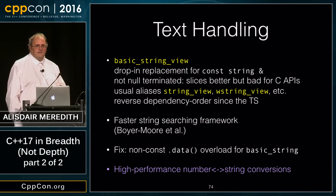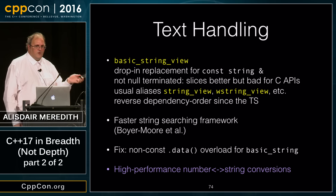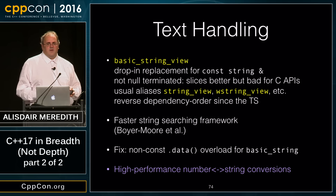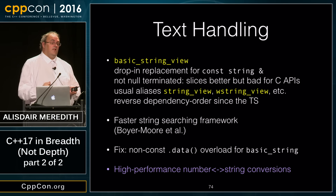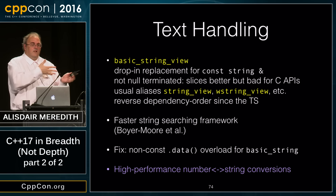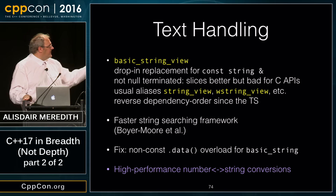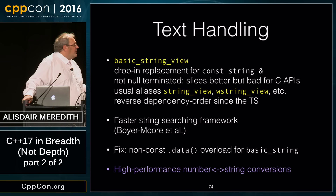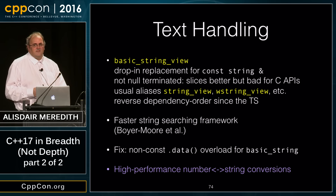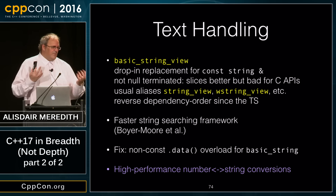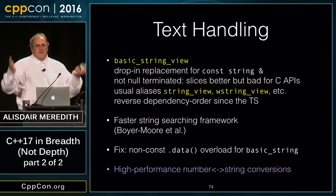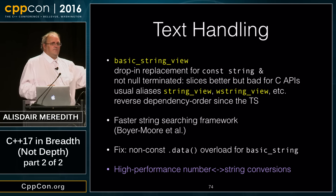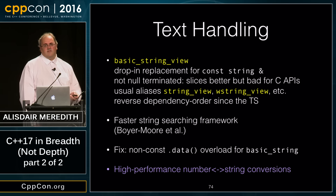A minor fix for basic_string: the data() member function only had a const overload, so we now allow a non-const overload so you can pass string contents to an underlying C API — with the understanding you won't change the length and won't overwrite the terminating null. Also, a high-performance number-to-string and string-to-number parsing library is coming in; it's marked as pending because minor interface issues prevented a clean merge, but it's expected to be part of C++17 when published next year.